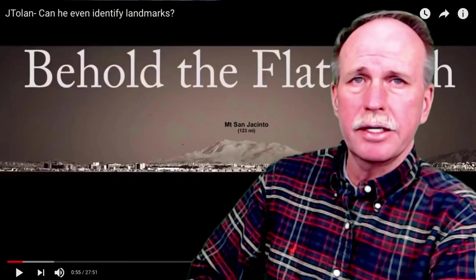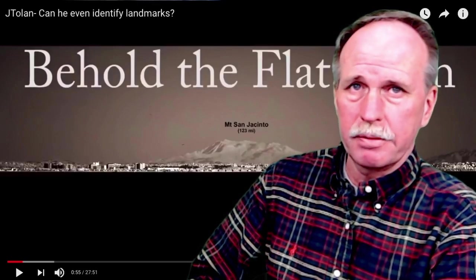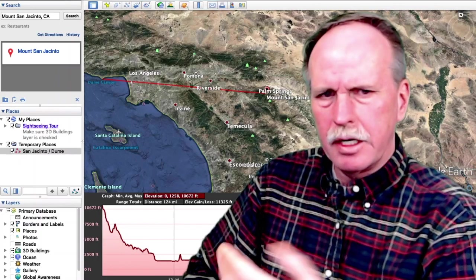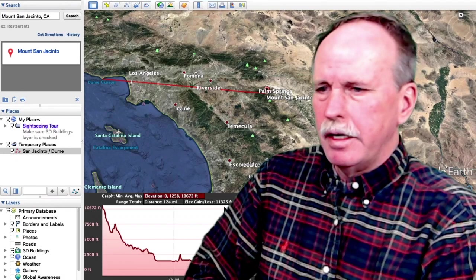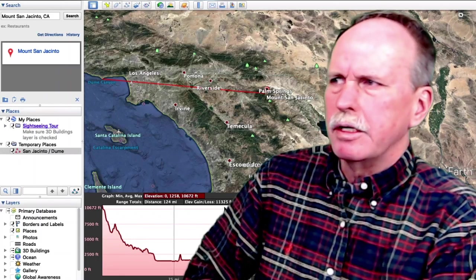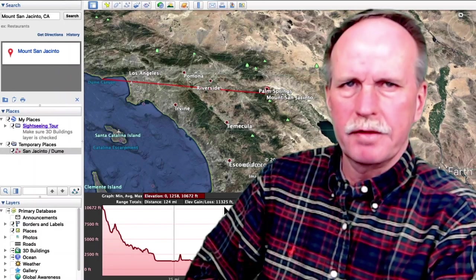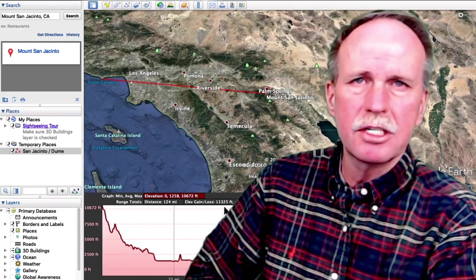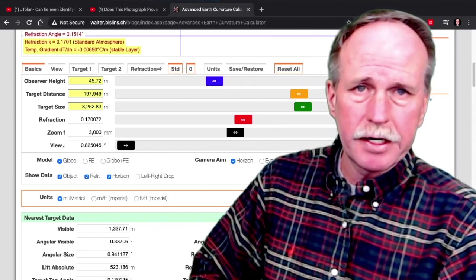And we'll look at two different ways of evaluating that. This photo is indeed powerful as a globe Earth proof. Now, of course, the first thing to do is to confirm the distances and elevations. So here's his line of sight from Point Doom to Mount San Jacinto. And it is indeed approximately 123 miles between those two points.